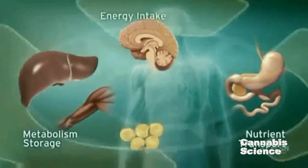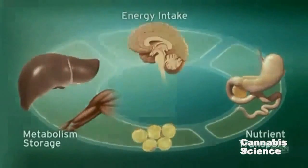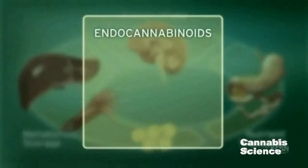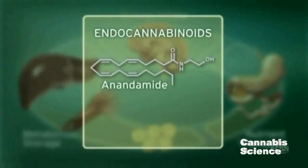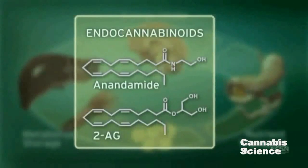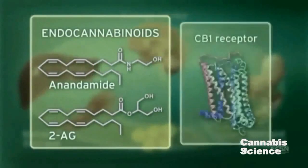The ECS regulates these processes through endogenous ligands, such as anandamide and 2-arachidonylglycerol, and the CB1 receptor.